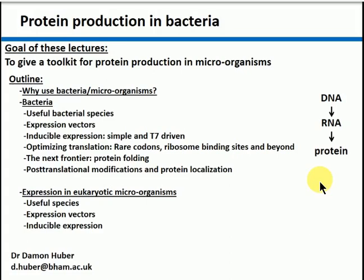We've looked at optimizing translation, including things like rare codons, ribosome binding sites, secondary structure of mRNAs, and the second codon. This time we're going to move on a little bit.